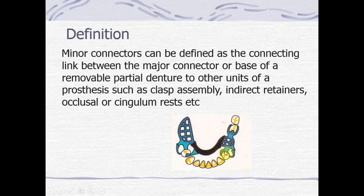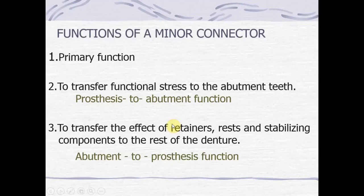The minor connector connects the major connector to all other components of the RPD. The primary function of a minor connector is to join the remaining components of the RPD to the major connector, and it is also used for the distribution of applied forces to the supporting teeth and oral tissues. It also transfers functional stress to the abutment tooth, as well as transferring the effect of retainers, rests, and stabilizing components to the abutment.